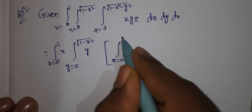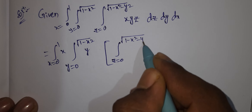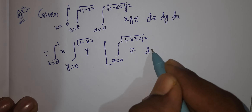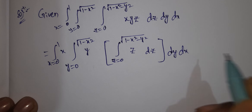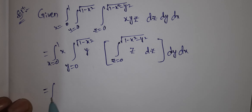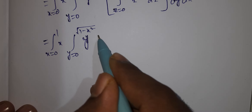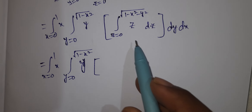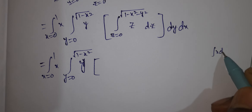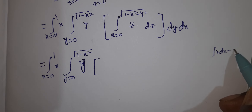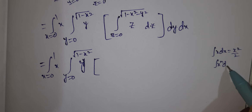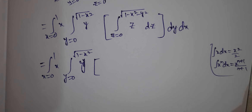The integral is: z from 0 to √(1-x²-y²), then dy dx. We will use two standard forms: the integral of z dz equals z²/2, and the integral of x^n dx equals x^(n+1)/(n+1). We will use these two forms to solve this problem.